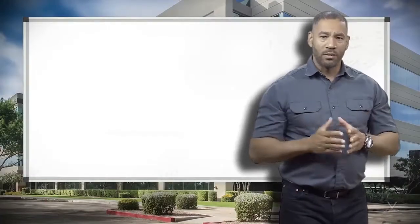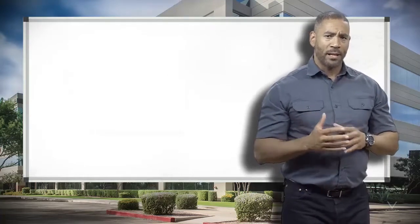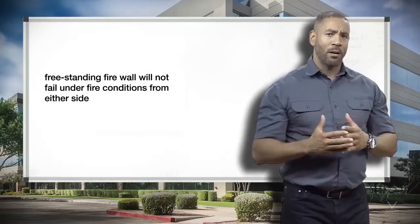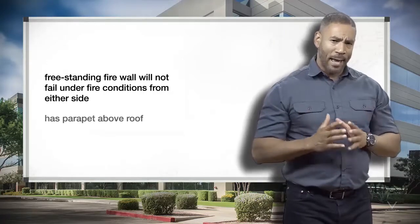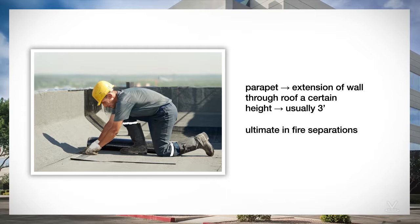The term firewall is loosely used as a construction element rarely seen in new construction. This wall is properly designated as a freestanding firewall that will not fail under fire conditions from either side and has a parapet above the roof. A parapet is an extension of the wall through the roof a certain height, usually three feet. This has always been thought of as the ultimate in fire separations. It is of masonry material with a deep foundation, and has the building steel or wood connections designed so that the building and contents on one side of the wall will burn and fall away without taking the wall with it.